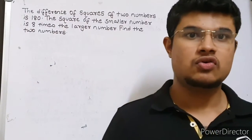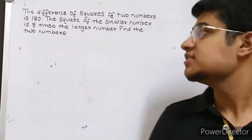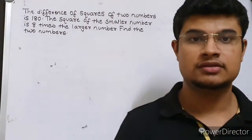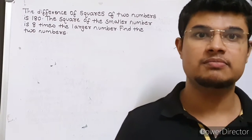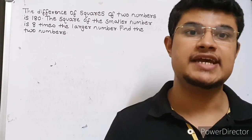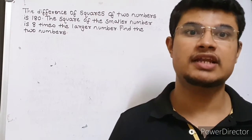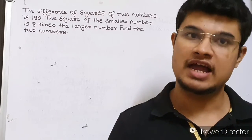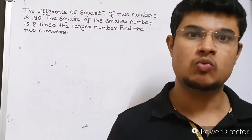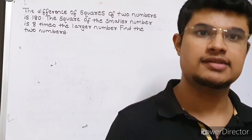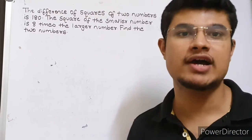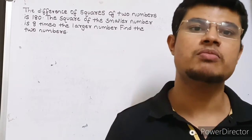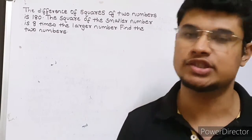The difference of squares of two numbers is 180 and the square of the smaller number is 8 times the larger number. We have to find the two numbers. I will denote one number as x and the other as y and proceed in the similar way of forming a quadratic equation.